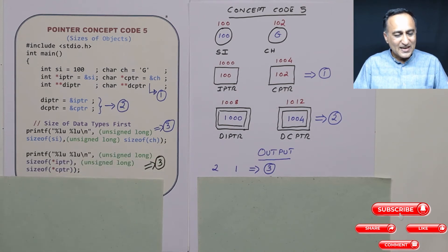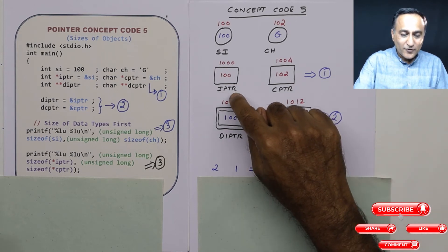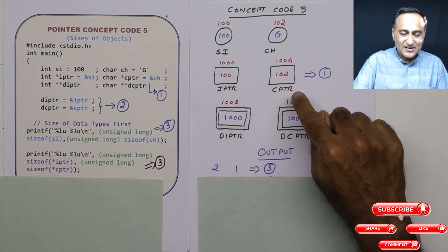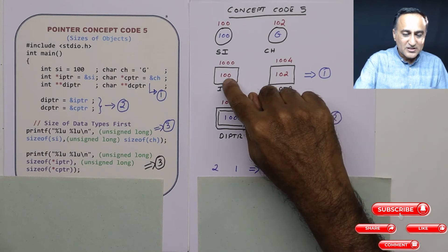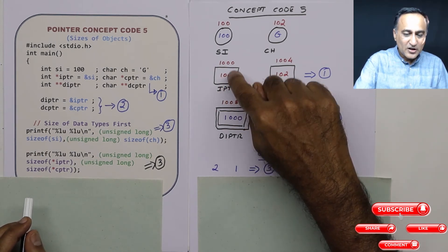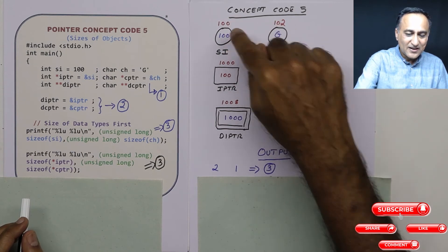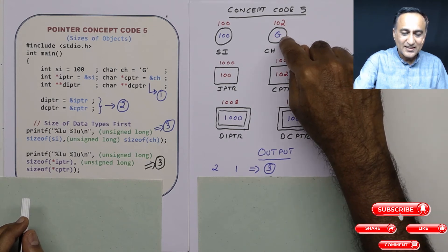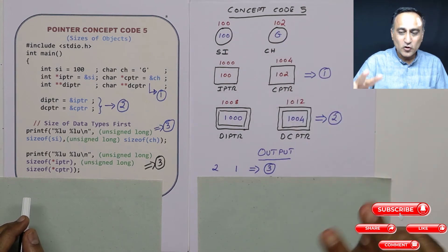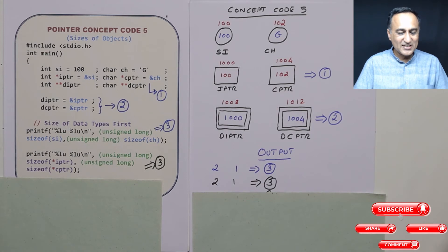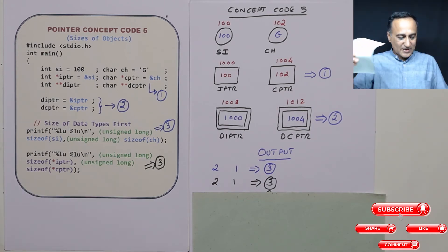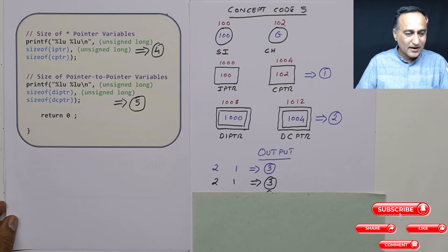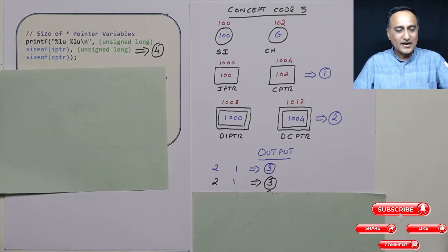Now what I am doing here is I am trying to print the value referred by iptr and the value referred by cptr. iptr is containing 100, cptr is containing 102. Star indicates value at address 100. Value at address 100 is the integer 100. Value at address 102 happens to be the character g. So size of 100 and size of g is going to be 2 and 1 again. Size of int and char is again 2 and 1 bytes respectively based on the assumptions I have made, although they can be 4 and 8 for integer and 1 of course for character variable always.